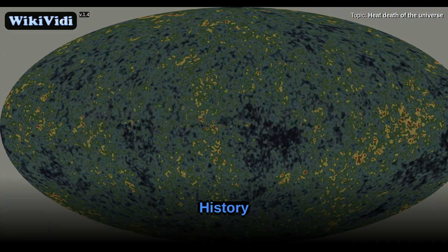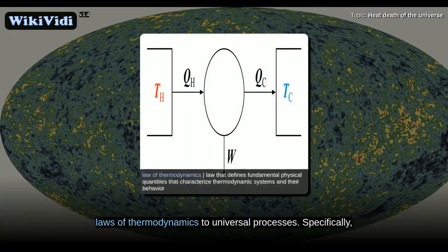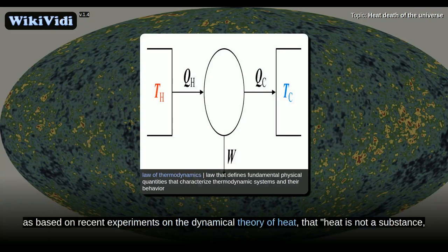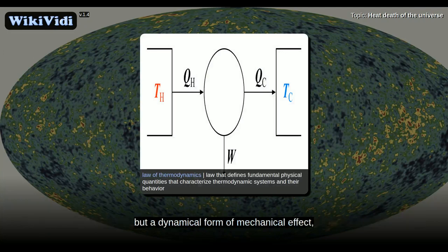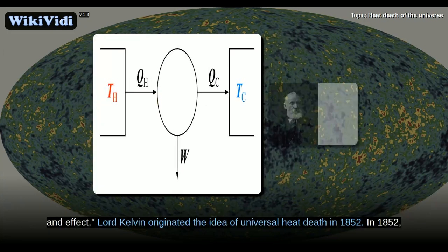History. The idea of heat death of the universe derives from discussion of the application of the first two laws of thermodynamics to universal processes. Specifically, in 1851 William Thomson outlined the view, as based on recent experiments on the dynamical theory of heat, that heat is not a substance, but a dynamical form of mechanical effect. We perceive that there must be an equivalence between mechanical work and heat, as between cause and effect.